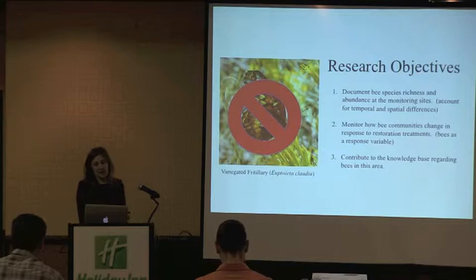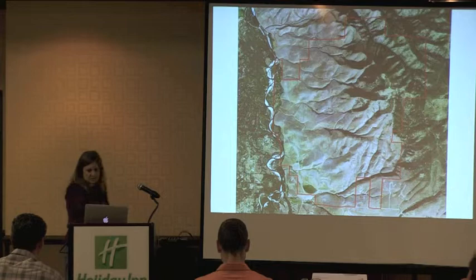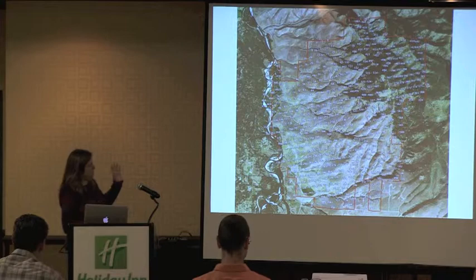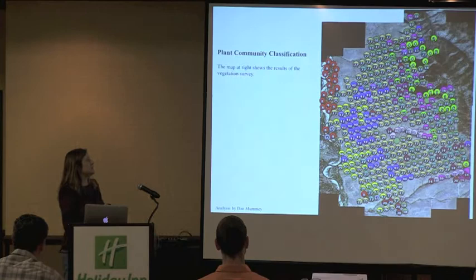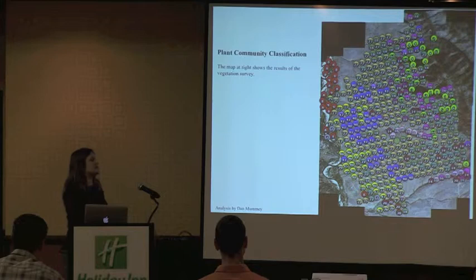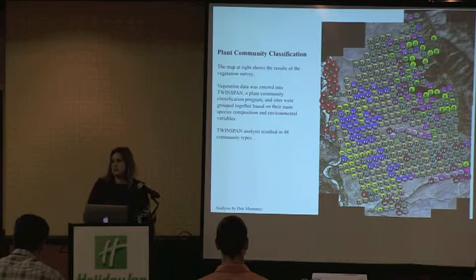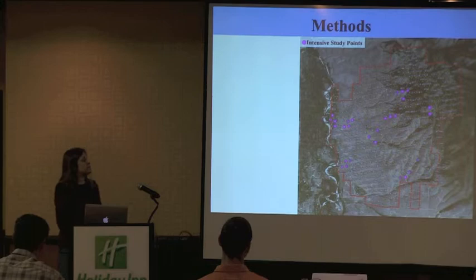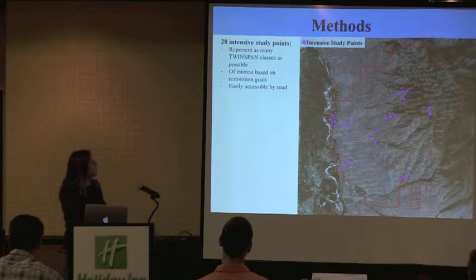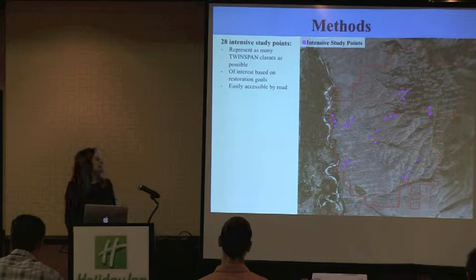The ranch has been overlaid with a grid of 570 points, and vegetation surveys have been conducted at every one of these monitoring points. All that veg data was used to classify each site into community types using a TWINSPAN analysis — that's the work that Dan did — which resulted in 48 community types. Of the 570 points on the ranch, 28 have been chosen as intensive study points to represent as many TWINSPAN classes as possible, based on restoration goals and road accessibility.